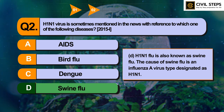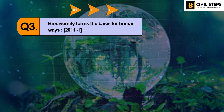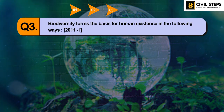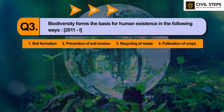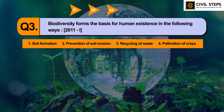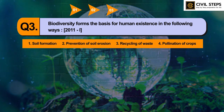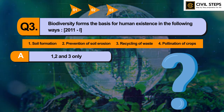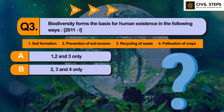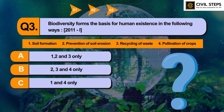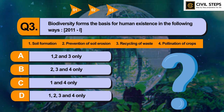Now let us discuss question number 3. Biodiversity forms the basis for human existence in the following ways: 1. Soil formation, 2. Prevention of soil erosion, 3. Recycling of waste, 4. Pollination of crops. Select the correct answer using the code given below. Option A: 1, 2, and 3 only. Option B: 2, 3, and 4 only. Option C: 1 and 4 only. Option D: 1, 2, 3, and 4.